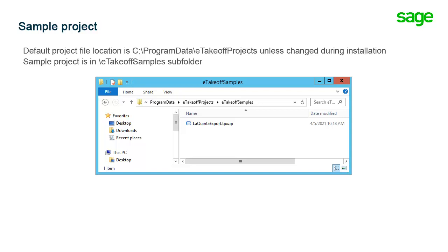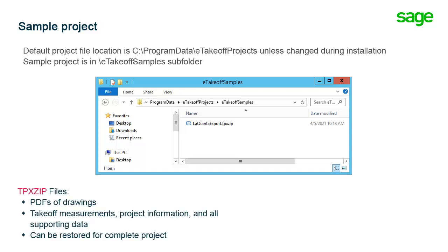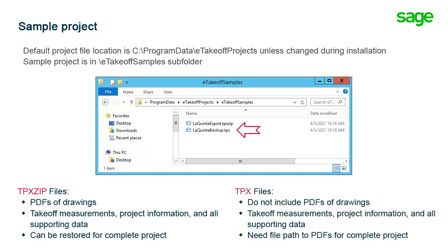Now we'll talk more about the kinds of backup files generated by Dimension in a later lesson. Just a quick note here: Dimension creates two different types of backup files. TPX Zip files include the project drawings, project information, all takeoff measurements, and any supporting data related to that project in a single portable file. Sometimes you'll see a TPX file, which is a different kind of backup. TPX files include all the same data — project information, takeoff, and supporting information — but they don't include the drawing files. So TPX files are usually much smaller in size than a TPX Zip.